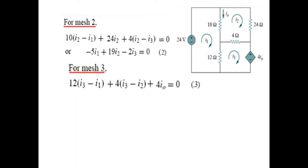Now we come to the third mesh. We start from the left corner, and since we are in the third mesh, I3 comes first: 12(I3 minus I1), then 4(I3 minus I2), and then this voltage source, plus 4I0.